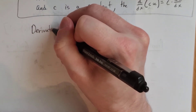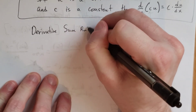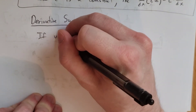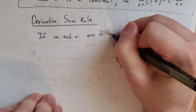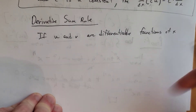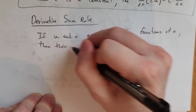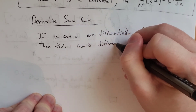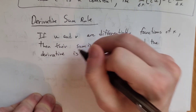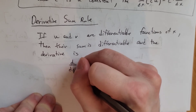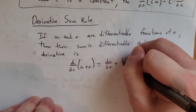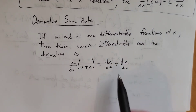One more rule: the derivative sum rule. If we have two differentiable functions u and v — differentiable functions of x — then their sum is differentiable and the derivative of u plus v is just the derivative of u plus the derivative of v. We can take the derivatives of each function separately and just add them.